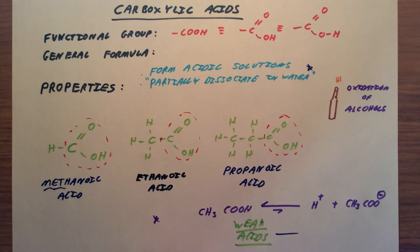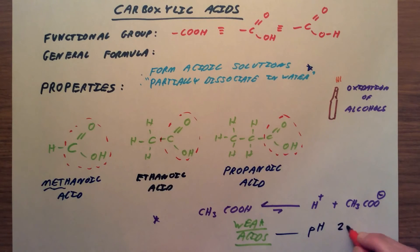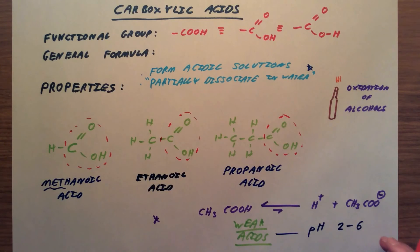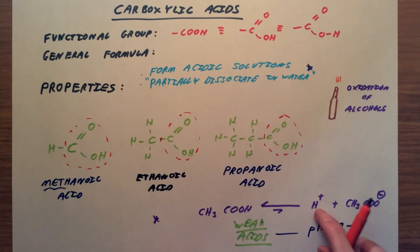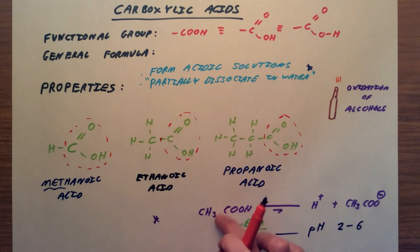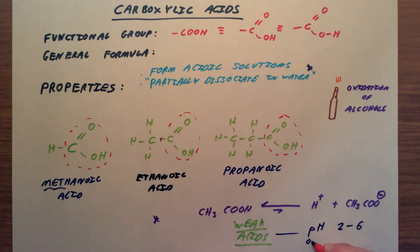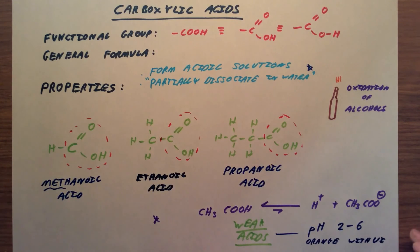What this means is that the pH will be higher than for strong acids — probably around pH 2 to 6, depending on how concentrated the solution is. You're very rarely going to get below a pH of 2, meaning there are not many H+ ions in solution. The equilibrium is very much towards the undissociated side, and they would go yellow or orange rather than red with universal indicator, implying we've only got a weak acid.